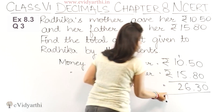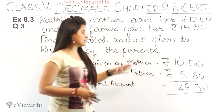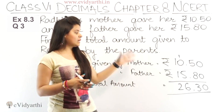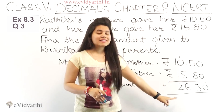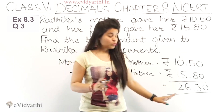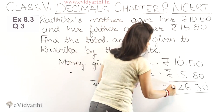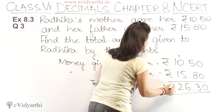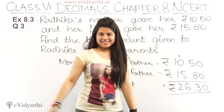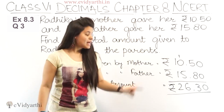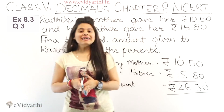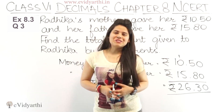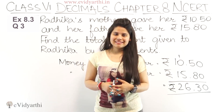This means ke dono ke paise — jitne maa ne diya and father ne diya — unko mila ke we have rupees 26.30. So yehi hame find karna tha. Now let's come to the next question. Bye.